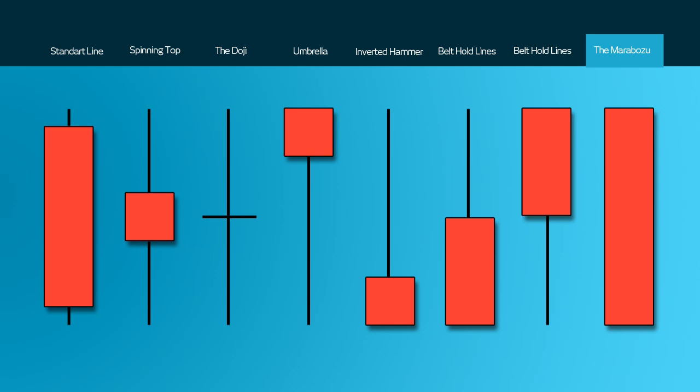The last graphical representation is the Marabozoo. These do not have any upper or lower shadows, and the high and the low are represented by the open or the close. A green Marabozoo forms when the open equals the low and the close equals the high, and this indicates that the buyers control the price action from the first to the last. A red will generally mean that the bears led the actual price action downwards.